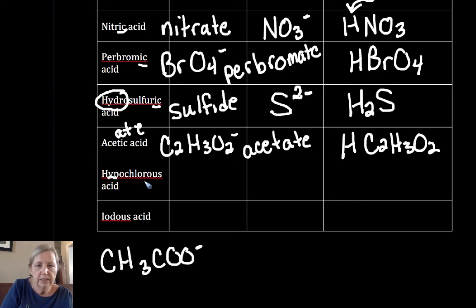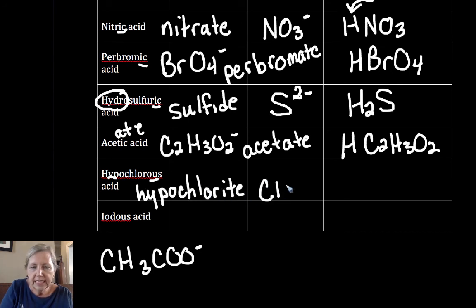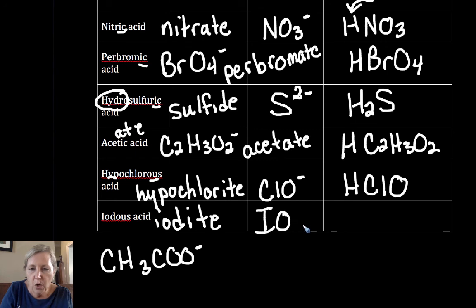Hypochlorous acid, not hydro. Hypochlorous comes from hypochlorite, which is ClO-. HClO. And iodous acid: -ous came from -ite. 'All night I was nauseous.' So that's iodite, which is IO2-. HIO2.